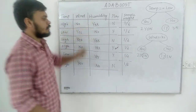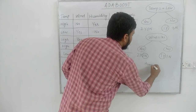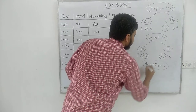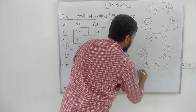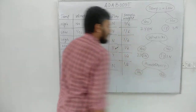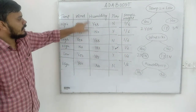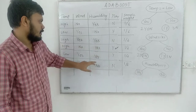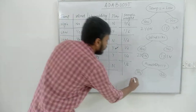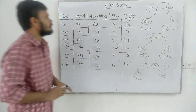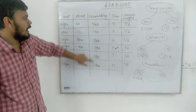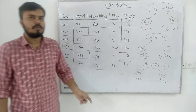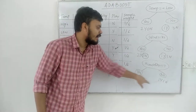Now let's move on to the humidity column. The criteria is humidity equals yes. For the yes branch there are four points: no, no, yes, yes — so two yes and two no points. For the no branch: no and no — one yes and one no. So in the humidity case there are also three incorrectly classified points.